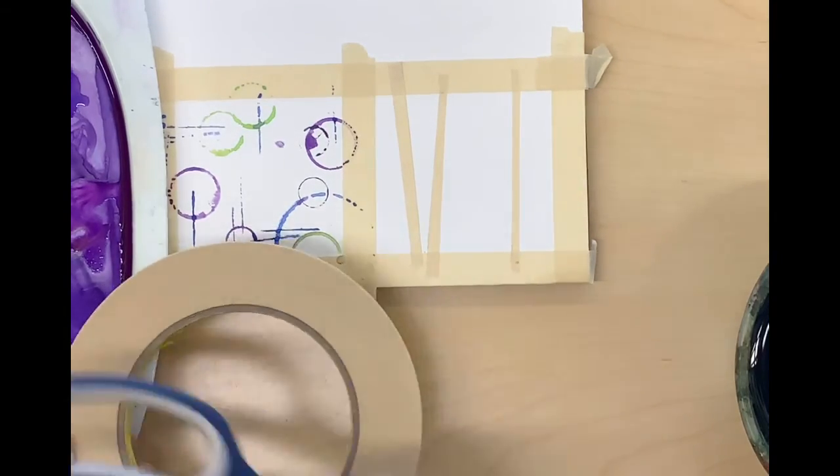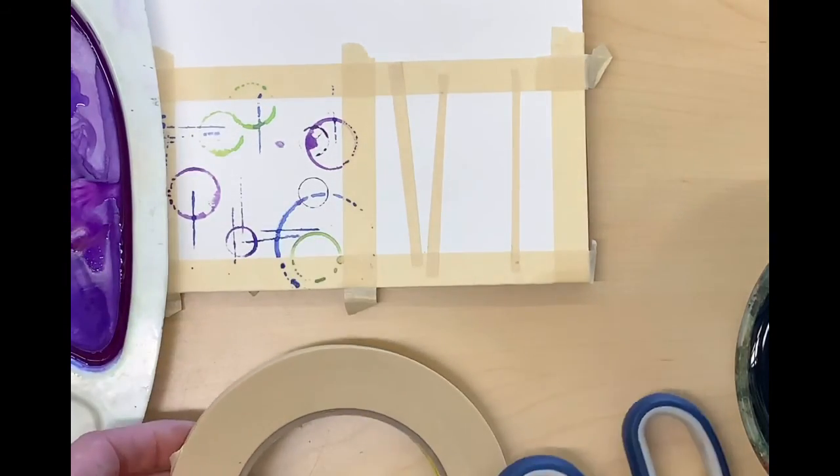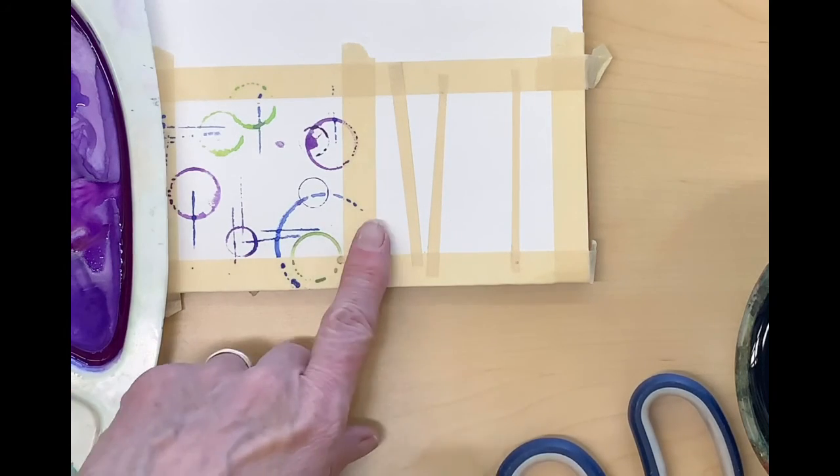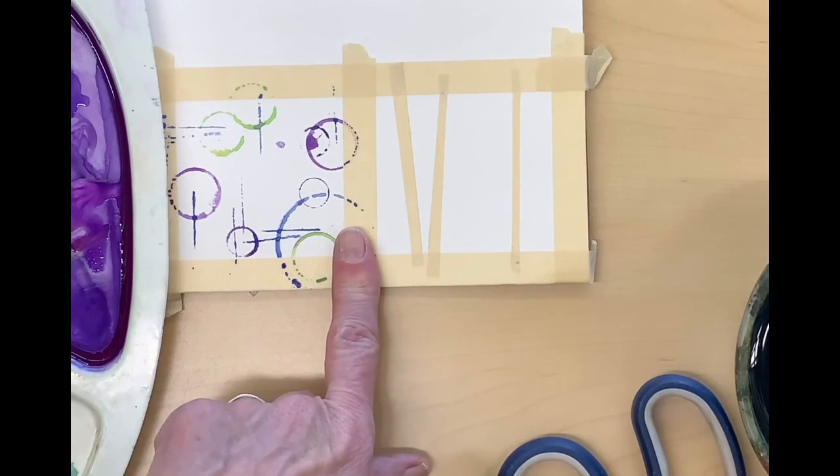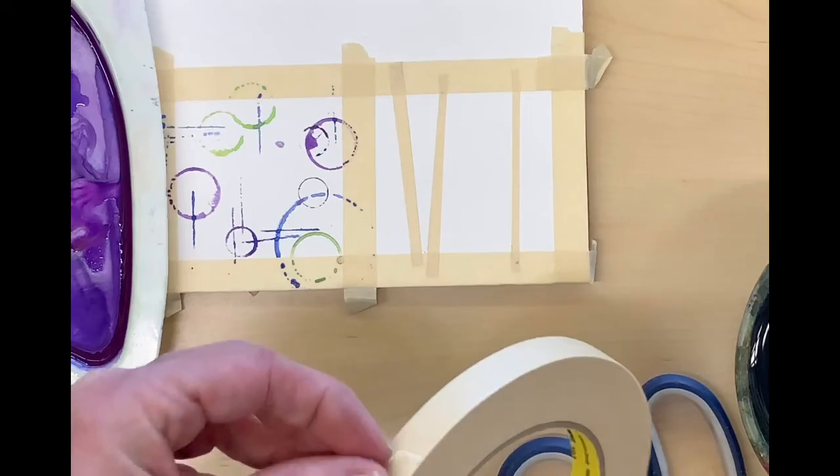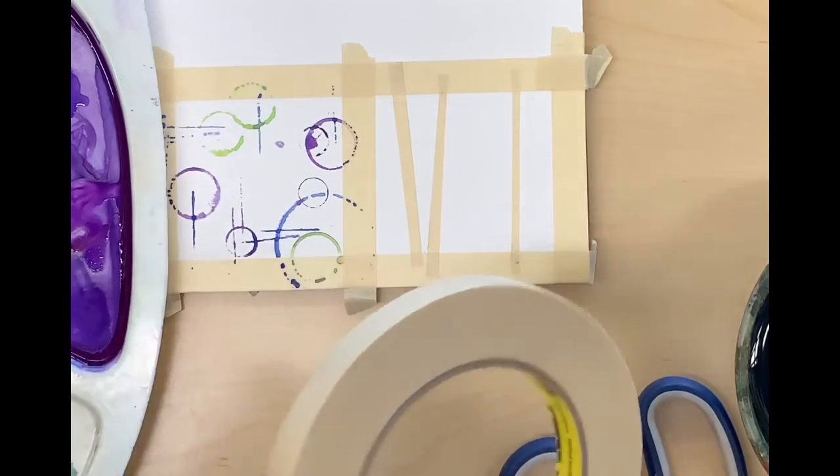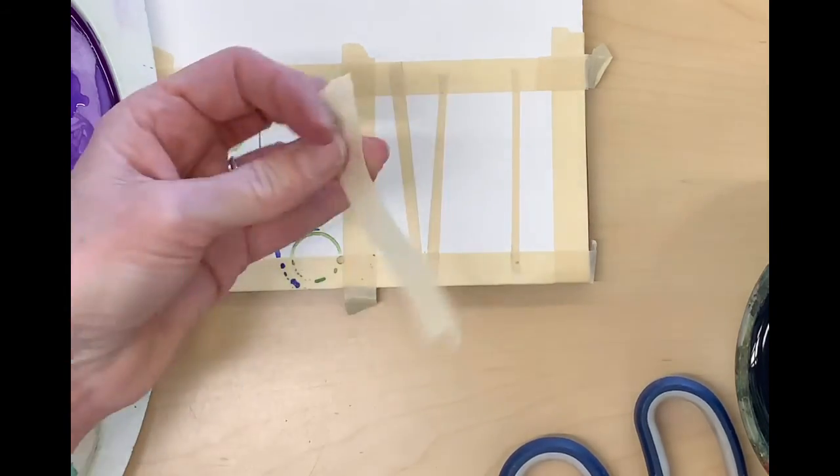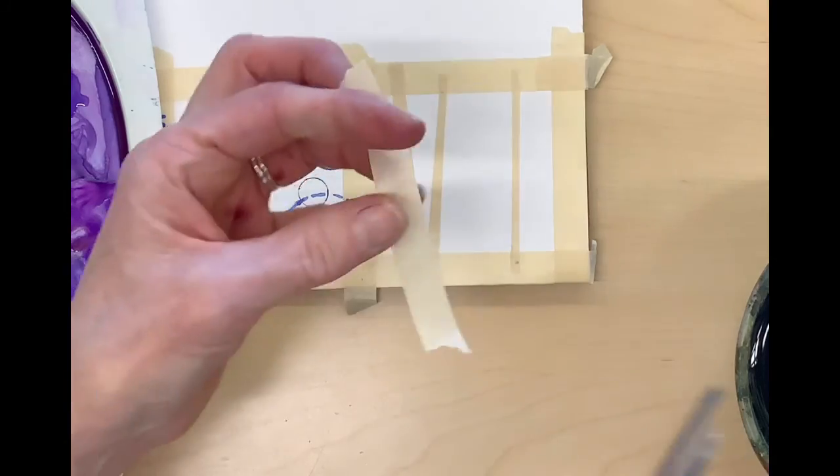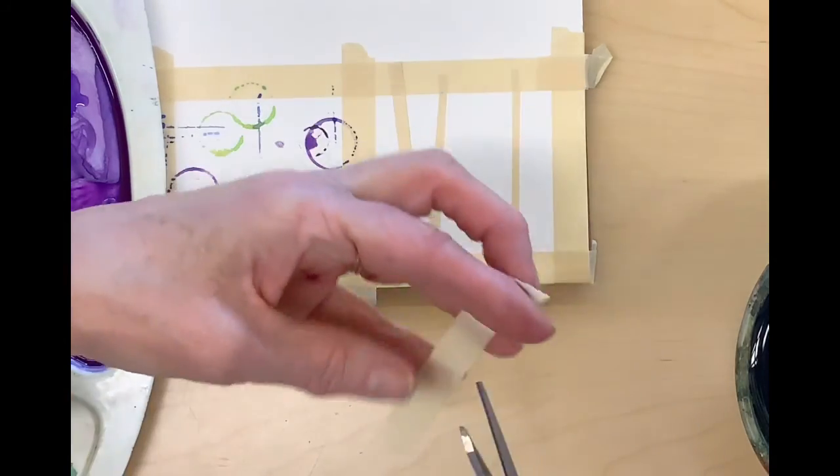You can use tape to mask out part of your paper. I'm just using masking tape here. I've cut out some pieces and laid them over the top. You can tear it as well, but if you do that I find the paint has a tendency to bleed underneath and you don't get a nice edge.